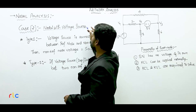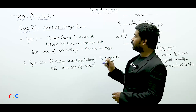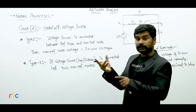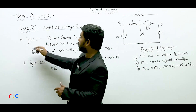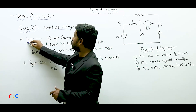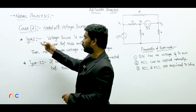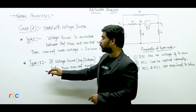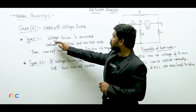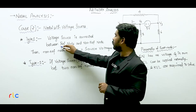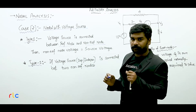Now, nodal with voltage sources. In the circuit, we apply voltage sources to the nodal analysis. Voltage sources will appear in the second case. There are type 1 and type 2. The first type is: voltage source is connected between reference node and non-reference node.